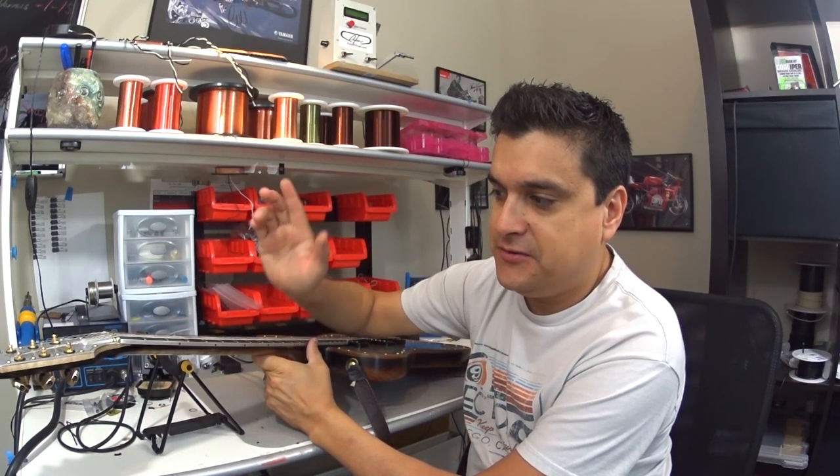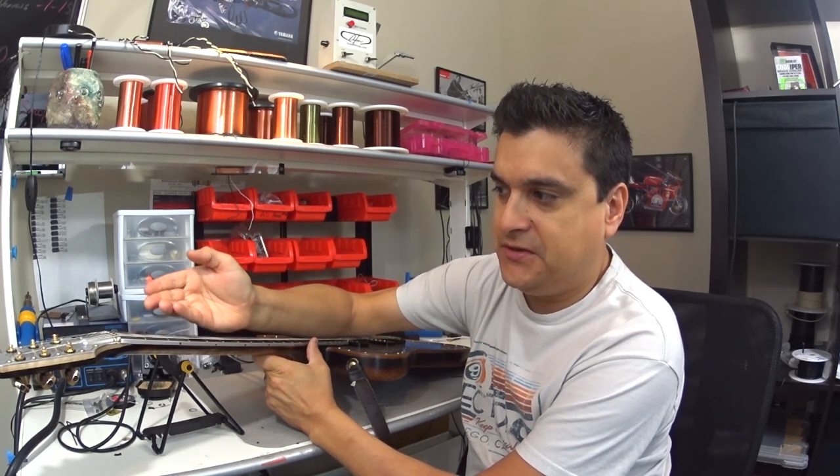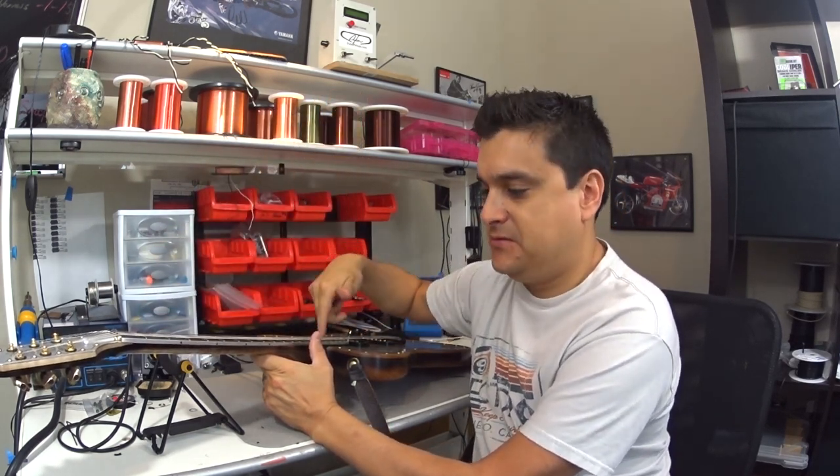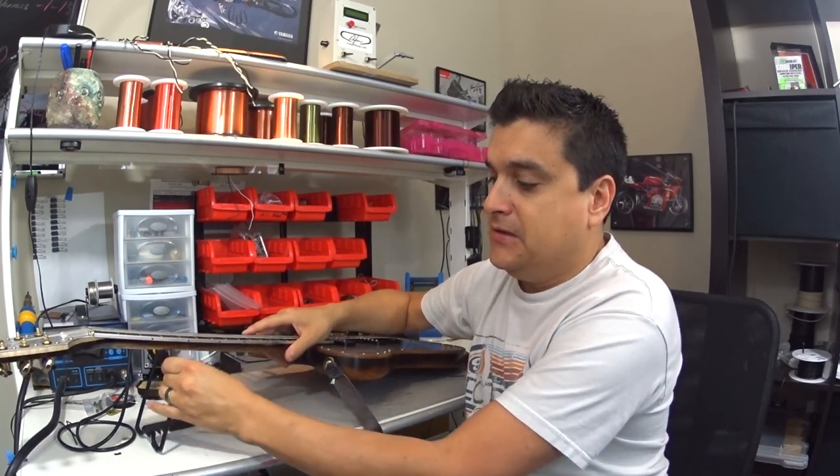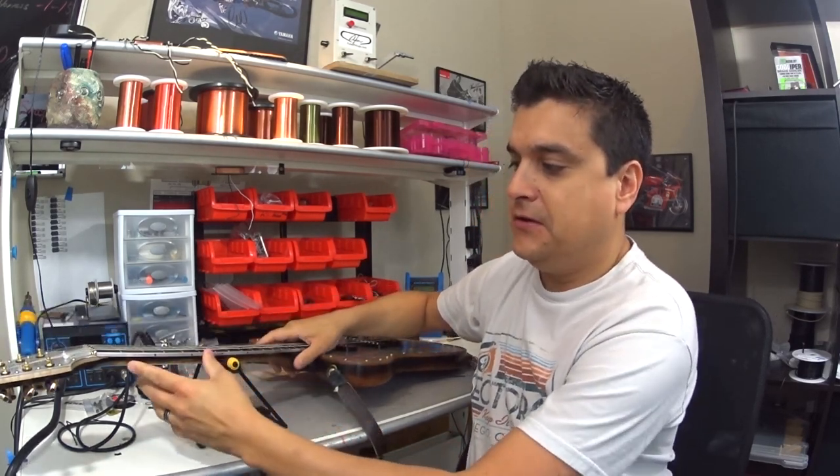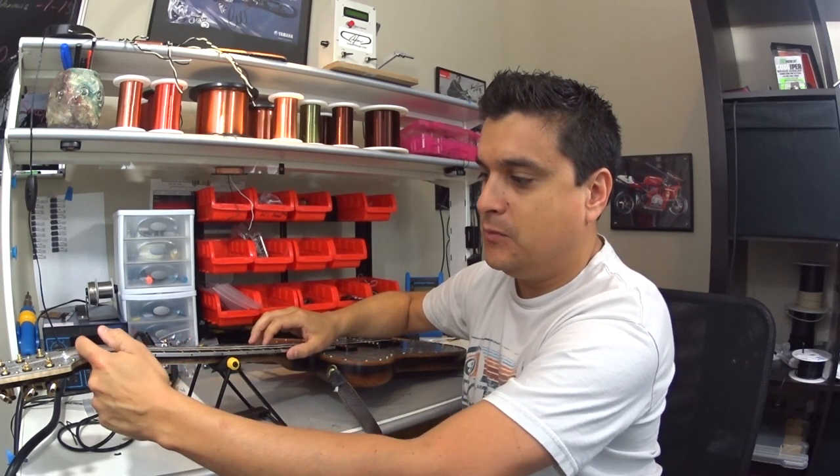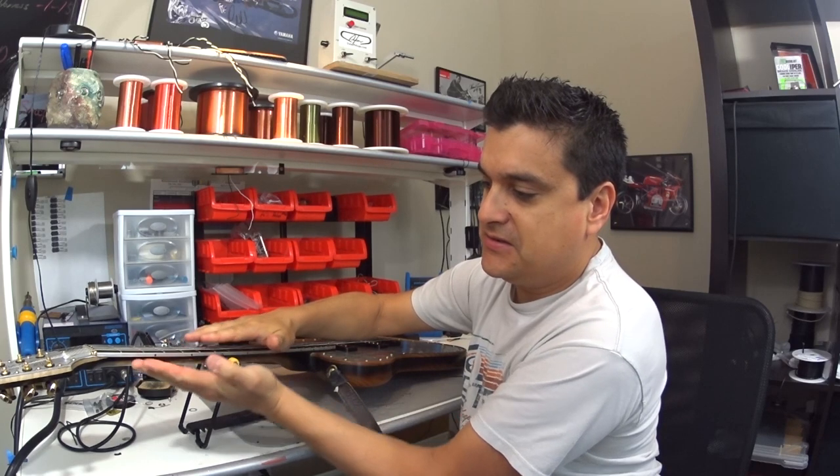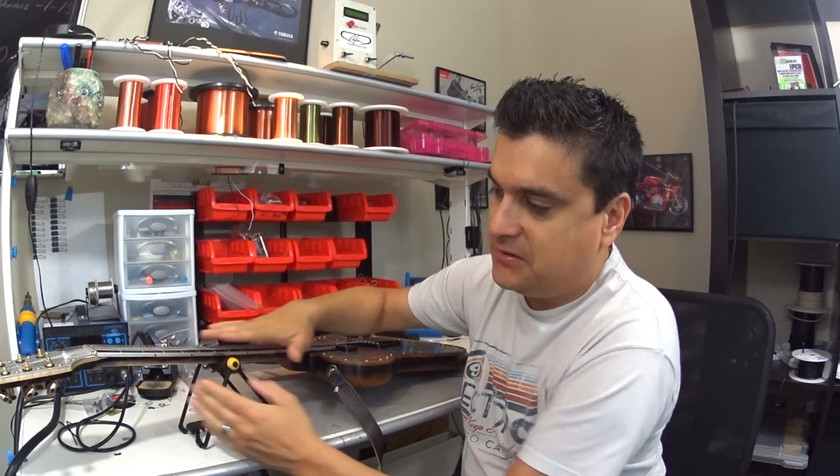The truss rod is in there to counteract that action by keeping it straight. As we loosen that truss rod, then basically the neck will start to pull up because the strings are pulling against it. It's fixed though, so when we tighten it, what's happening is it's actually bending it up in the middle.